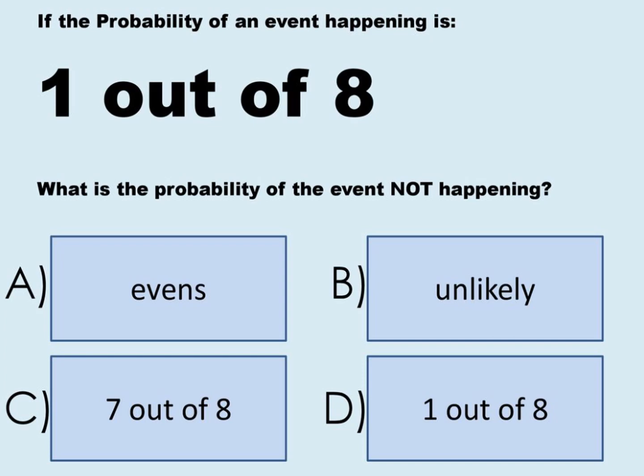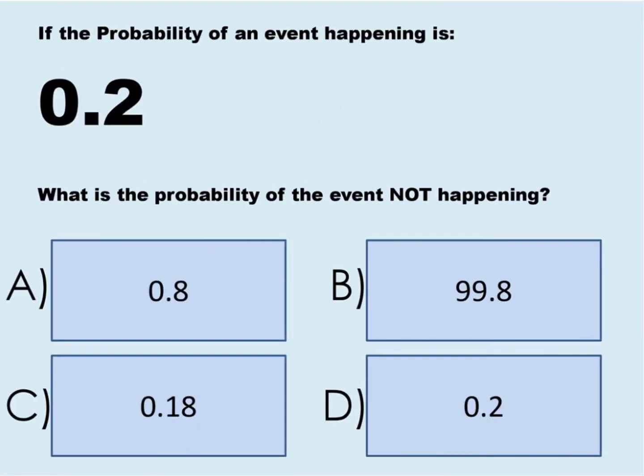If the probability of an event happening is 1 out of 8, what is the probability of the event not happening? It is 7 out of 8 — that is, 8 over 8 minus 1 over 8. Next: if the probability of an event is 0.2, what is the probability of the event not happening? It is 0.8, since 1 minus 0.2 equals 0.8.